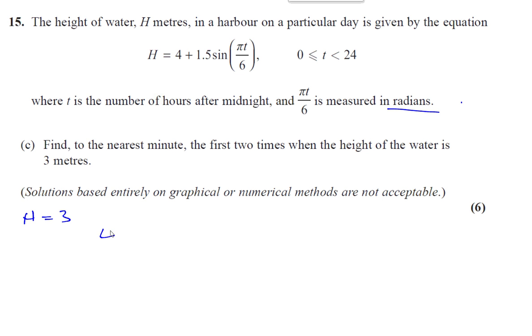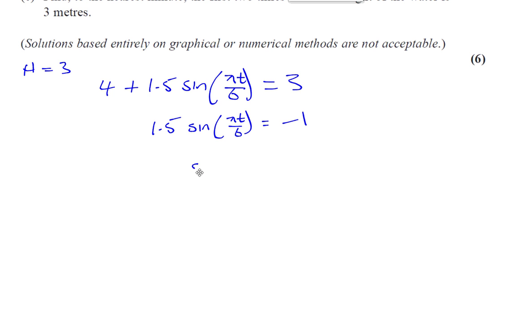First thing is we make the equation equal to 3. So 4 plus 1.5 times sine of pi t over 6 equals 3. Take 4 from both sides: 1.5 times sine of pi t over 6 equals negative 1. Divide by 1.5: sine of pi t over 6 equals negative 2 over 3, because 1 divided by 3 over 2 gives you 2 over 3.